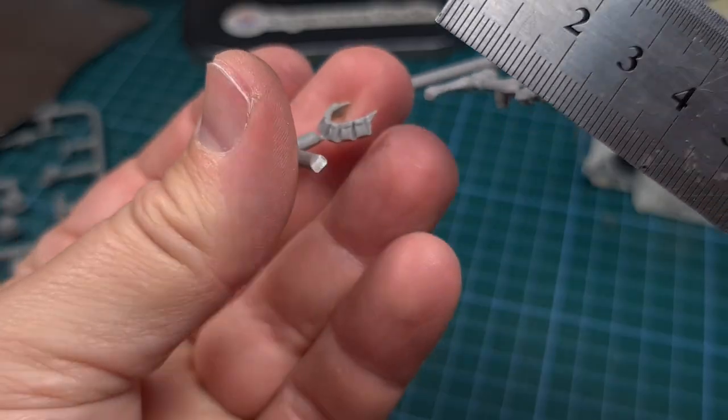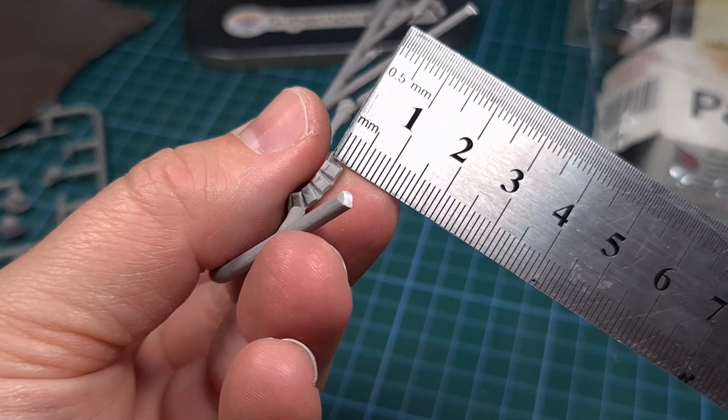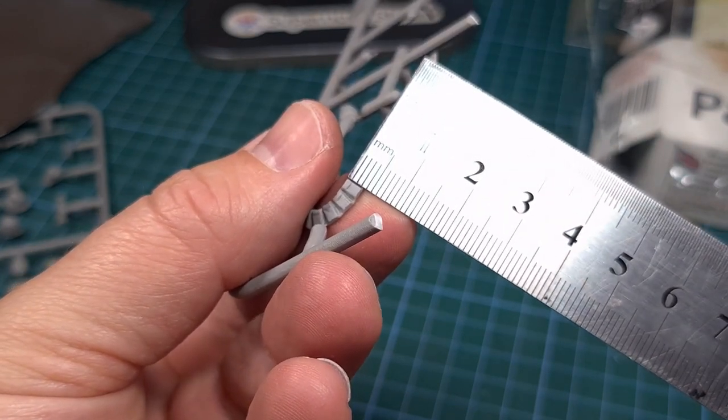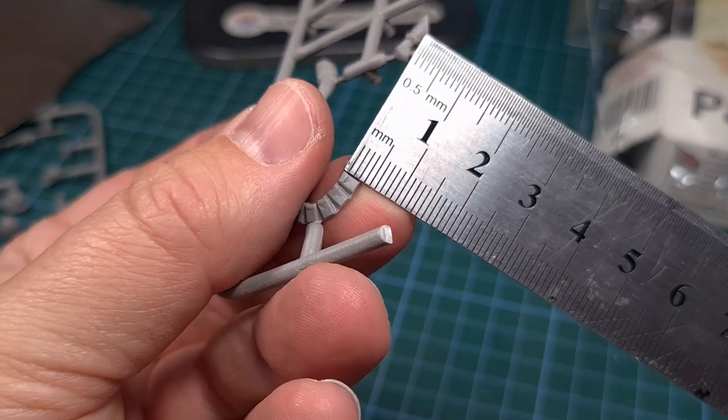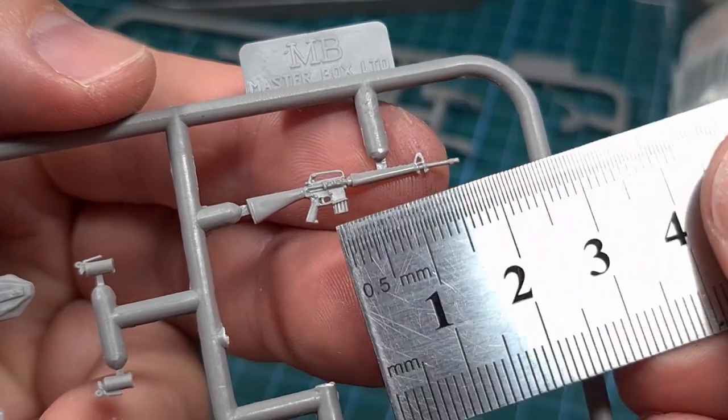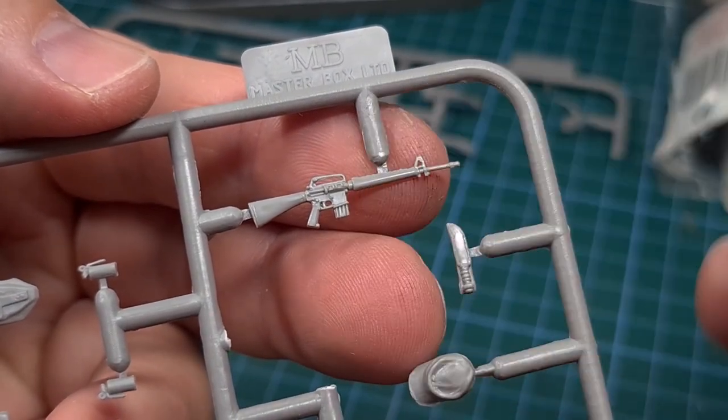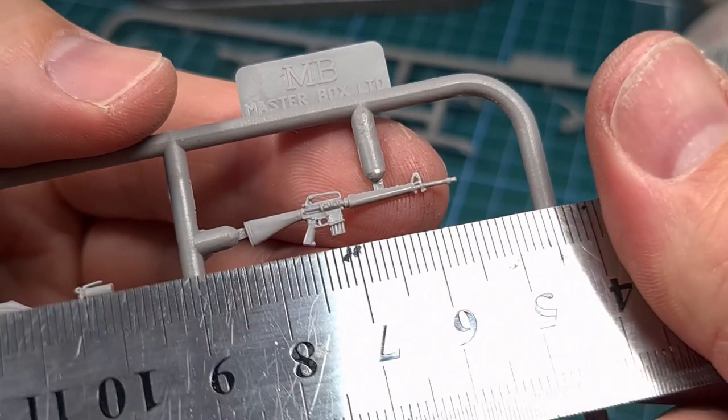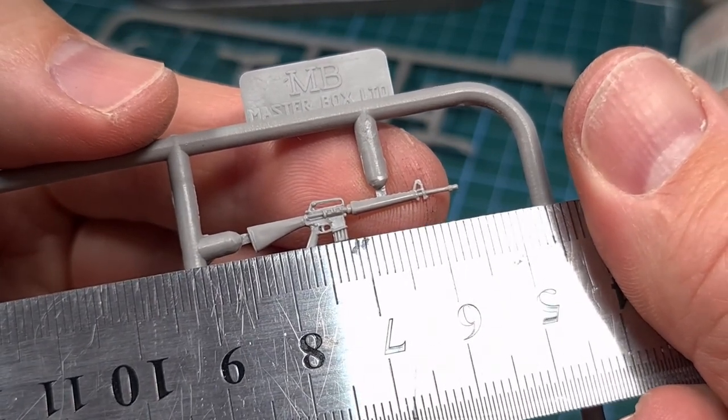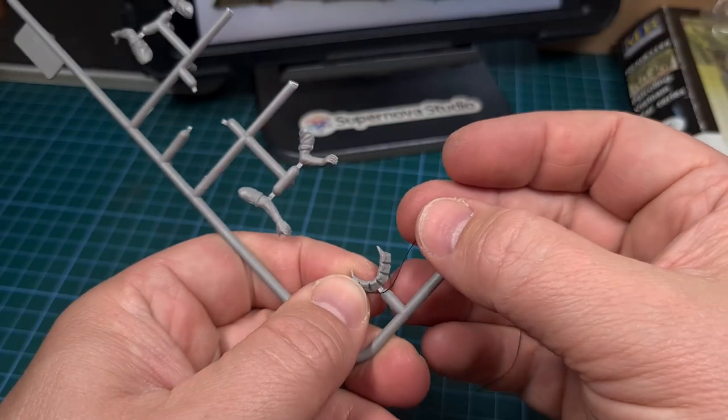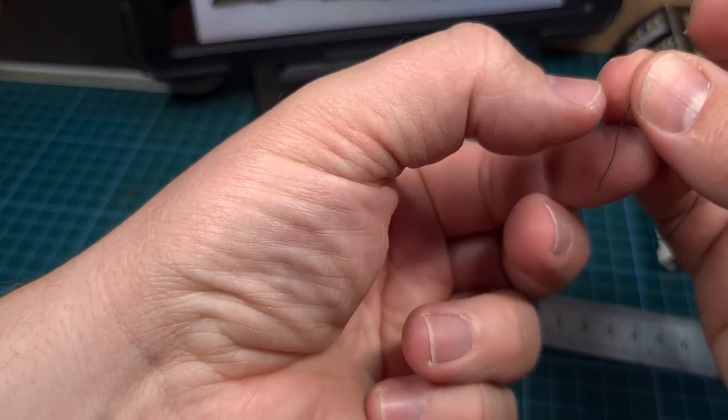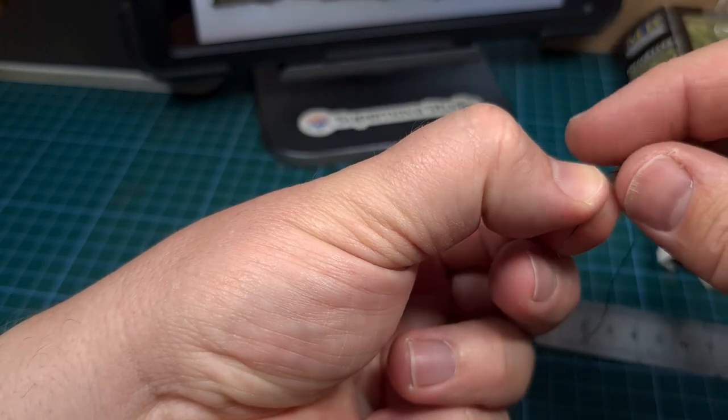Next you need to take careful measurements of an existing bandolier. Your figure kits should be able to help you with this. You need the length and the width of a magazine. What's also helpful at this stage is to measure a 20 round M16 magazine. You'll find this on the sprues of your figure kits. I also find that for curved bandoliers a little piece of string will make it easier to measure an exact length.